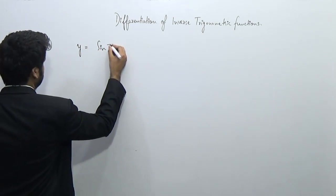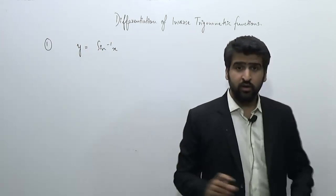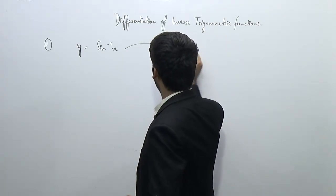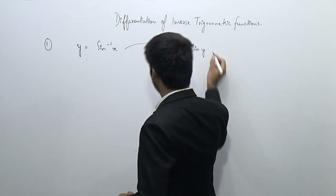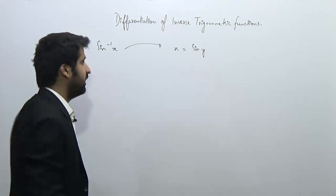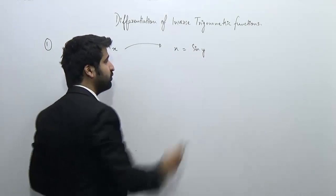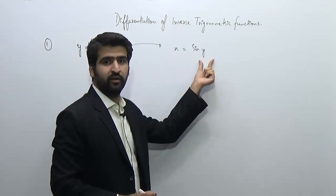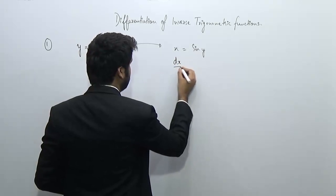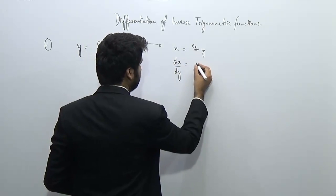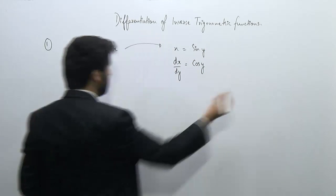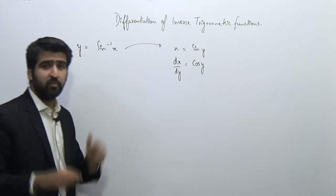If y is equal to sine inverse x, from inverse trigonometry we can write x as x equals sine of y. Now if you differentiate x with respect to y — since x is a function of y — you get dx/dy, and we know the differentiation of sine y is cos y, so this becomes cos y.